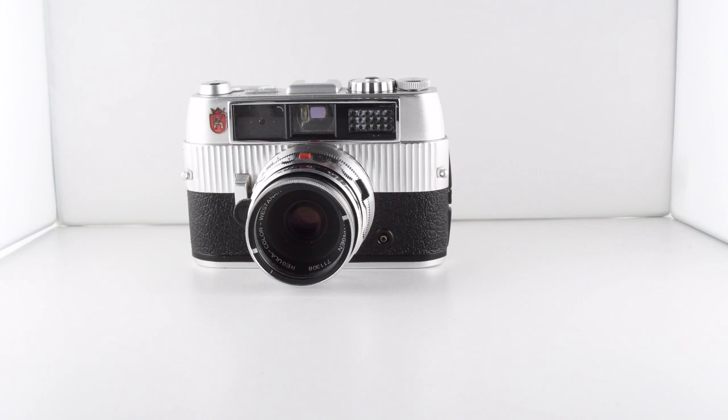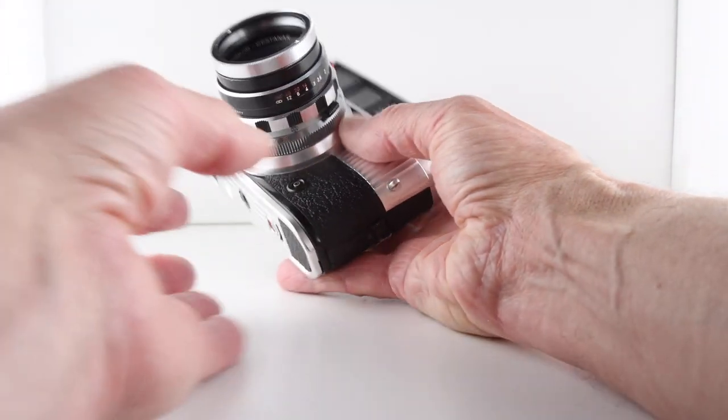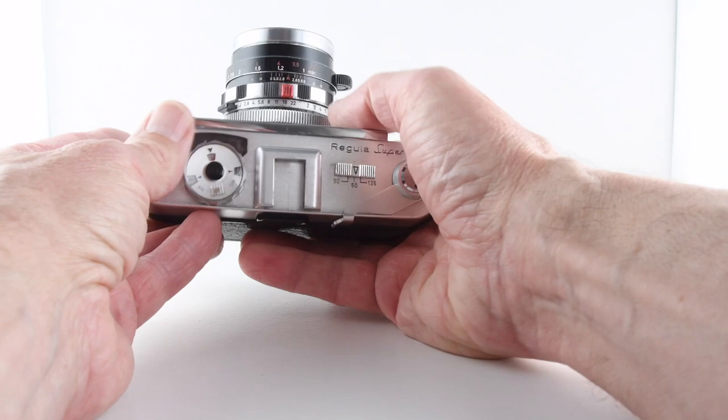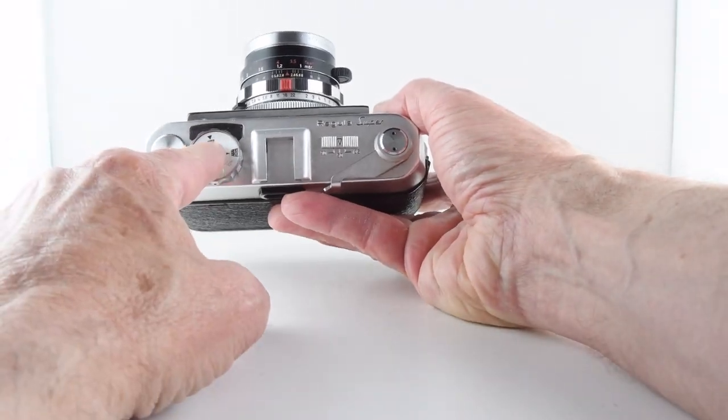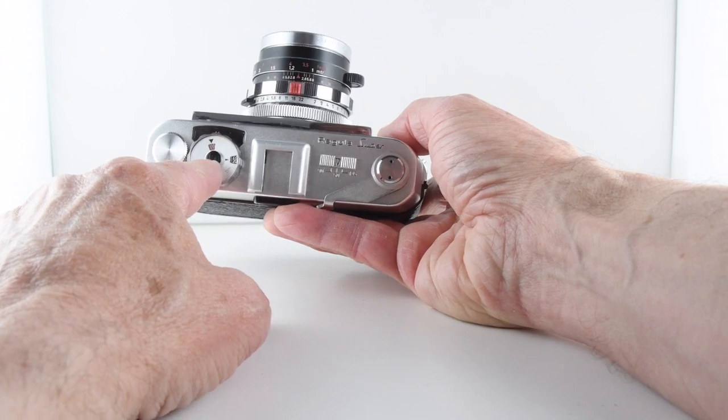This is camera number 82 of 365, a King Regular Super Rage Fighter camera. Looking at the top of the camera, we can see it has an included light meter, I believe it's a Bui light meter.